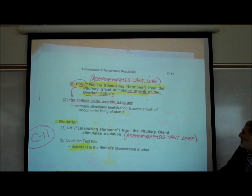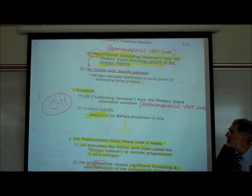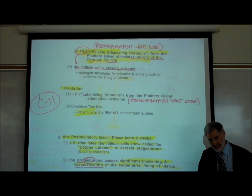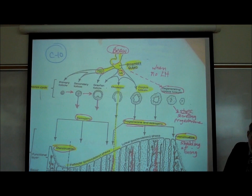FSH is causing the follicle growth, and then ovulation is caused by LH released from the pituitary gland. Let's look at page C10, which is a much clearer diagram showing the physiology. The previous diagram on C8 looked more anatomical, and it's difficult to show physiology on a static picture of an organ.